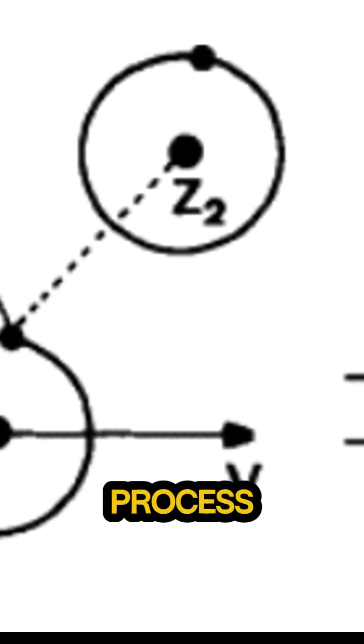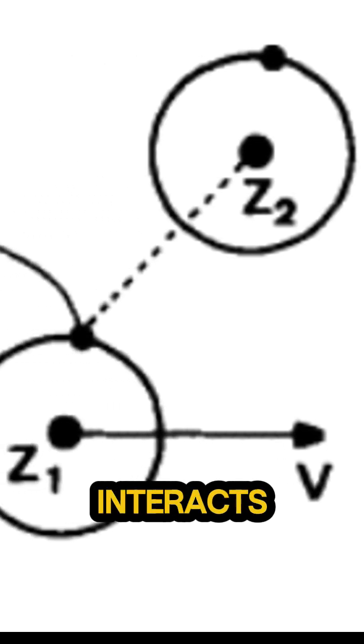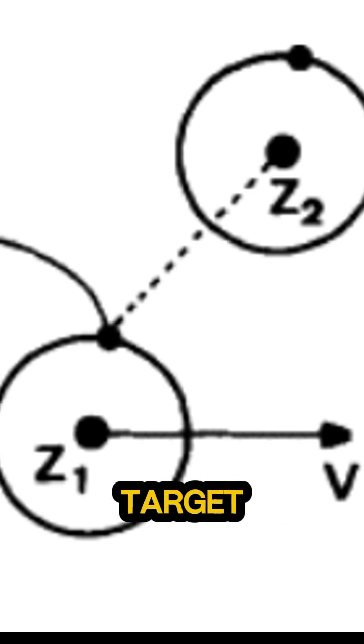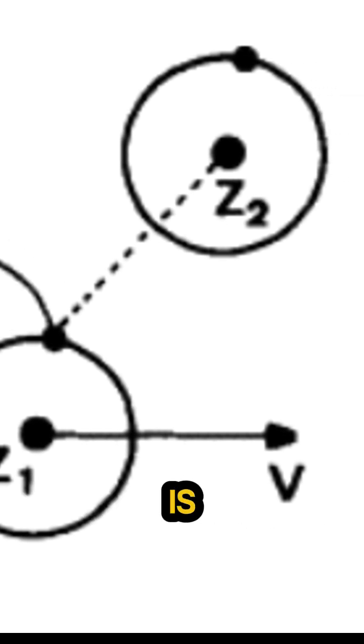Projectile electron loss is a process in which an ion interacts with an atomic or molecular target and at least one electron is ejected from the projectile as a result of this interaction.